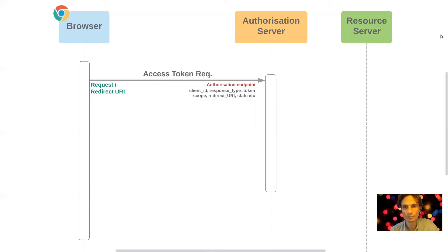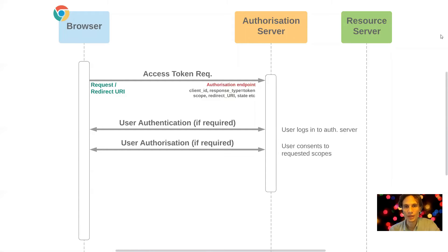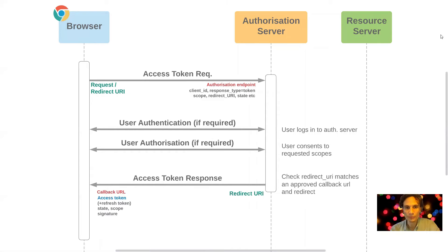The state parameter can also be helpful to persist information between the access token request and the token response. The authorization server will first check whether the user is already logged in and has a session; if not, it will prompt for login. It will check if the user has previously approved the requested scopes and if not, prompt them to agree to sharing those scopes. It will also check that the redirect URI provided matches one of the allowed callback URLs configured in the authorization server, and assuming it does, will redirect the browser back to that redirect URI.